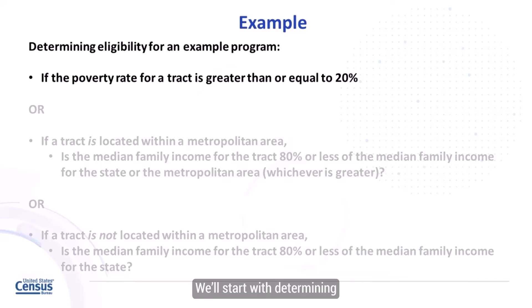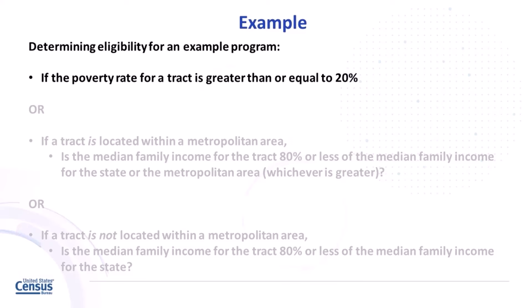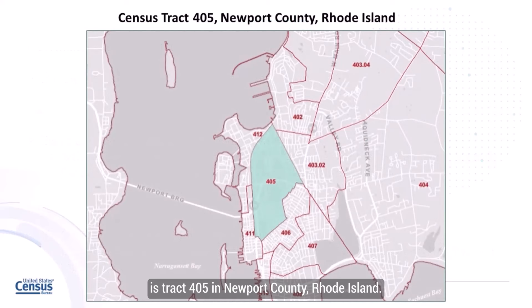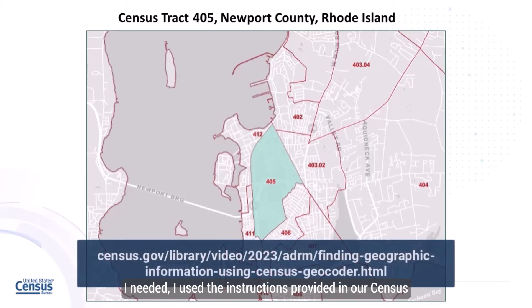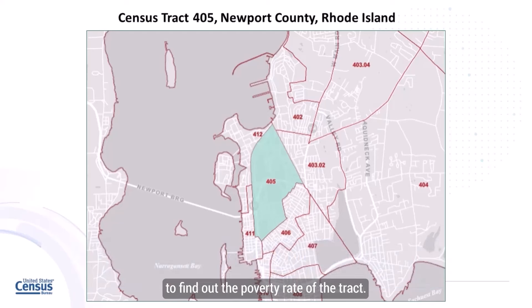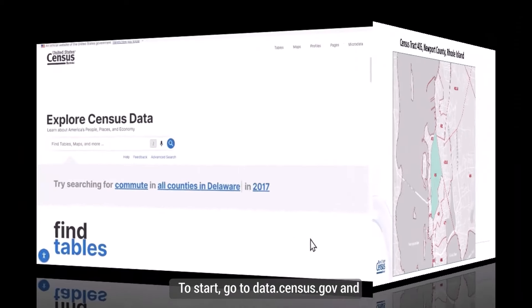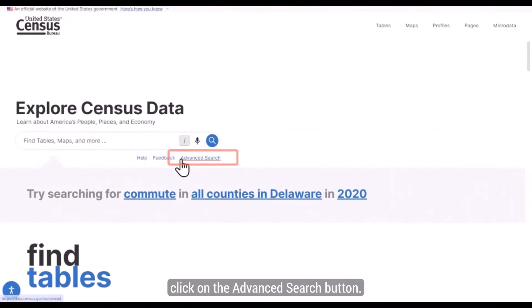We'll start with determining whether the poverty rate for a given tract is 20% or higher. The tract of interest is tract 405 in Newport County, Rhode Island. To find out the tract number, I used the instructions provided in our Census Geocoder tutorial found at the link below. Now that I know the tract number, I can go into data.census.gov to find the poverty rate. Go to data.census.gov and click on the Advanced Search button.